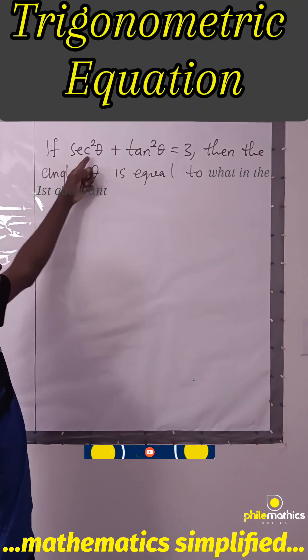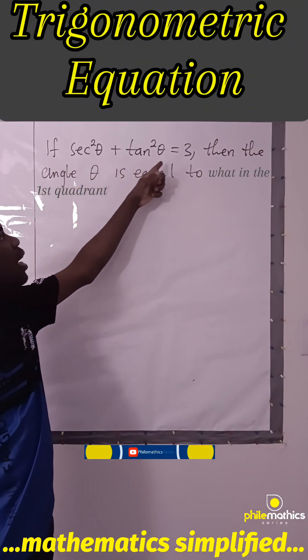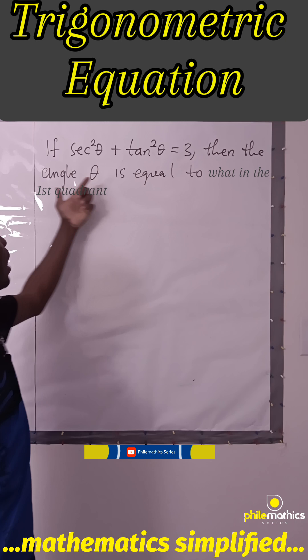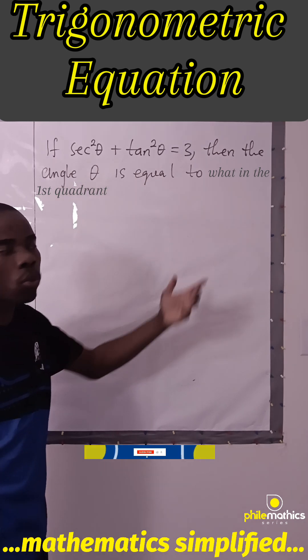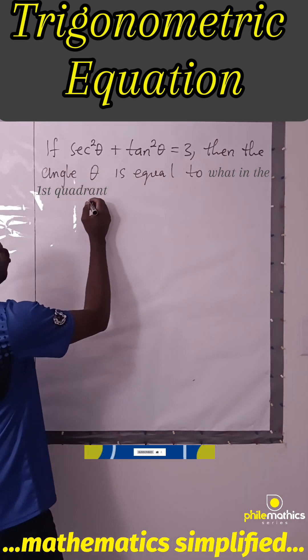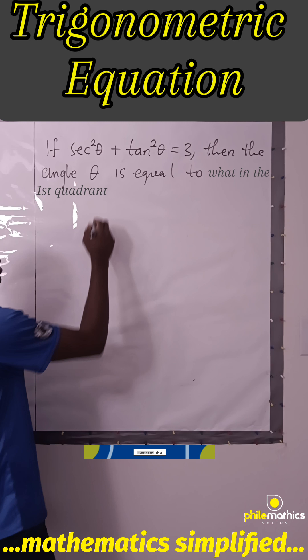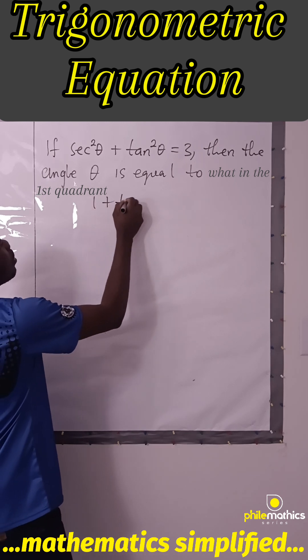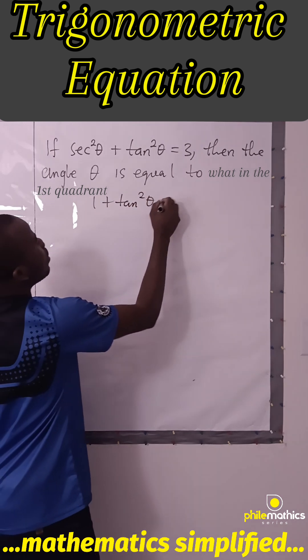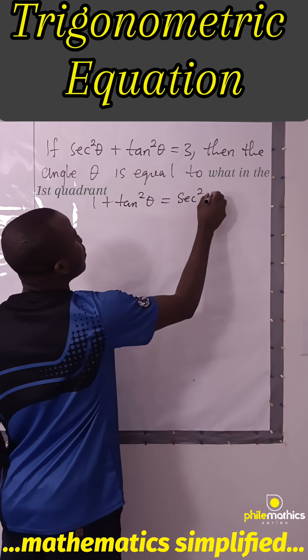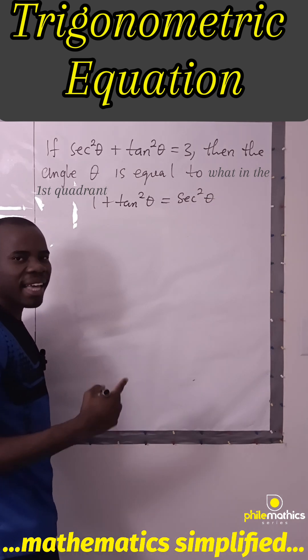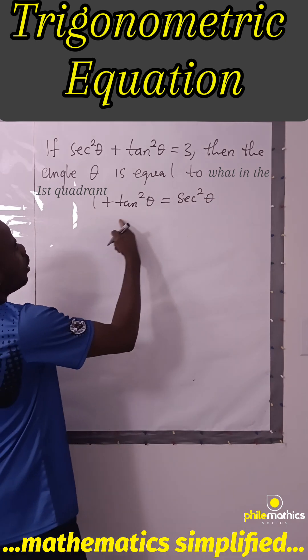We are told that if sec²θ + tan²θ = 3, then the angle θ is equal to what? Recall that 1 + tan²θ = sec²θ from trigonometric identities.